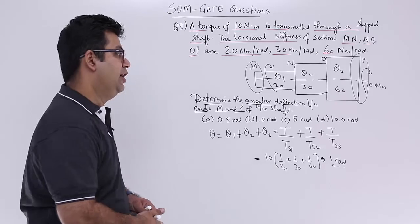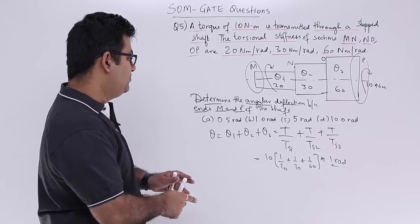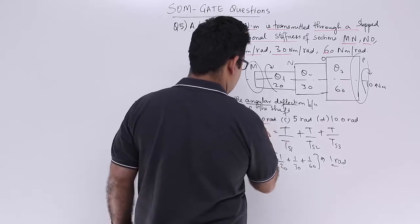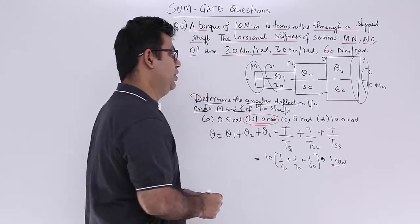So you will have 1 radian as the answer. So when you solve this, you get 1 radian. So the correct option is B which is 1 radian.